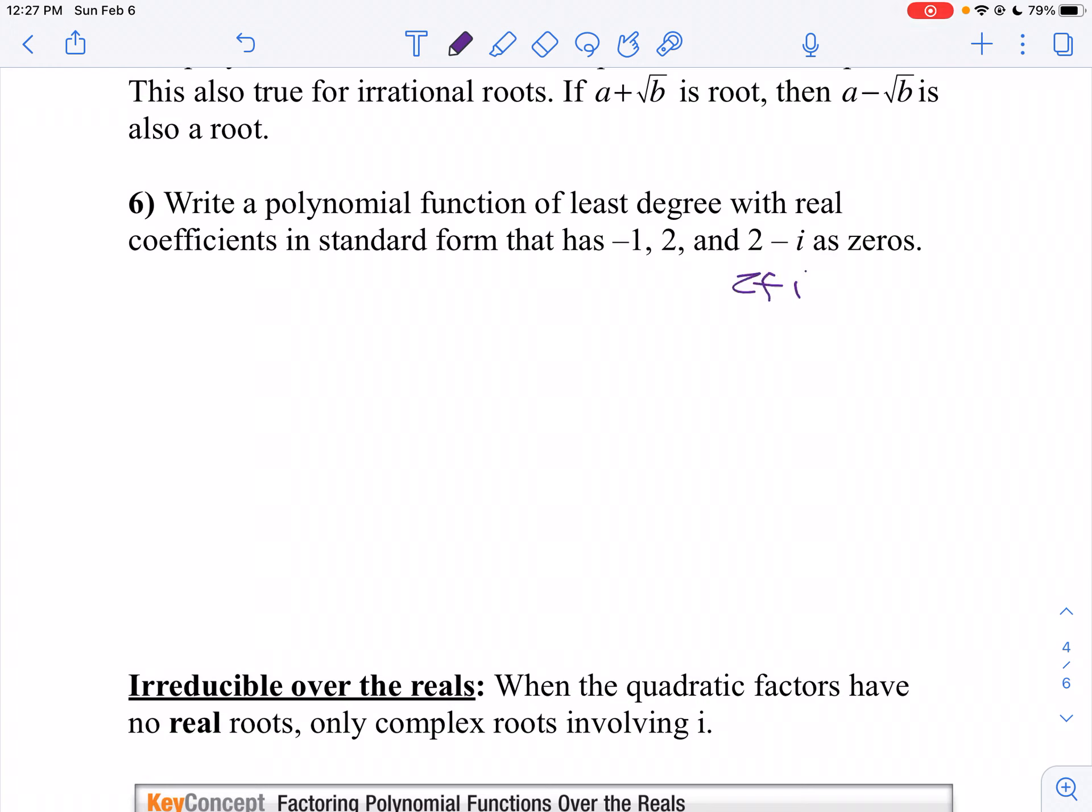Now let's write that in linear form. That's going to be (x minus negative one), times (x minus two), times (x minus (two minus i)), times (x minus (two plus i)).